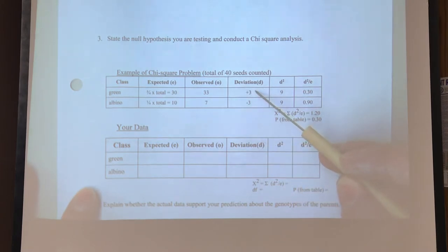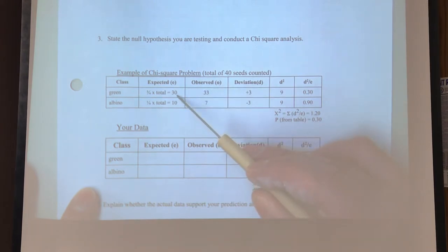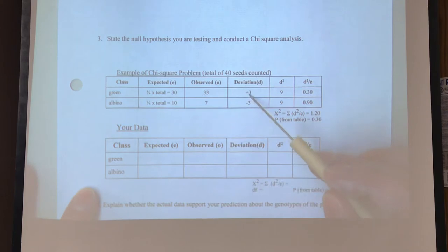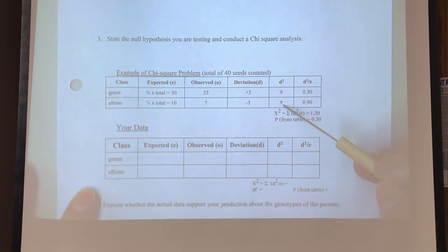All right, so what we do to get our deviation is we take our observed and we subtract our expected. So 33 minus 30 gives us plus 3. 7 minus 10 gives us negative 3. Now, it doesn't matter that it's positive or negative because the next column, what we do is we square that. So we take our deviation and we square it. So 3 times 3 is 9. Negative 3 times negative 3 is 9 as well.